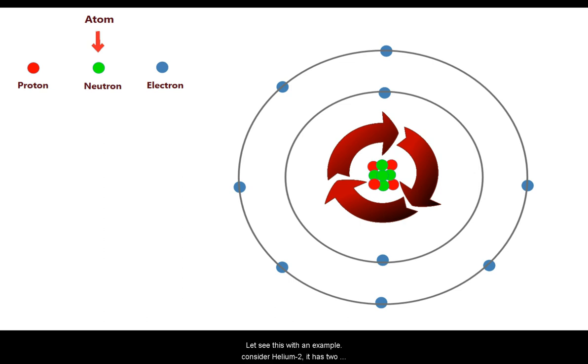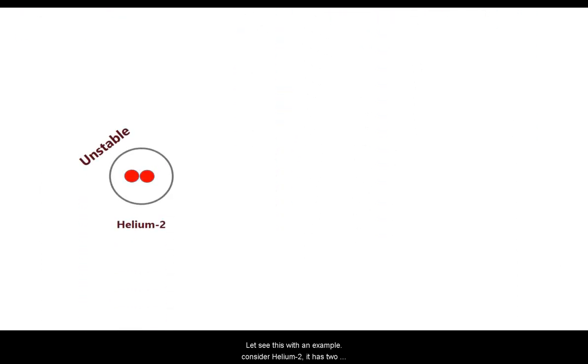Let's see this with an example. Consider helium-2. It has two protons and zero neutrons. As we discussed earlier, the repulsive force is much higher here because there is no neutron that could actively bind with protons, and so helium-2 is known for its extremely unstable nature.